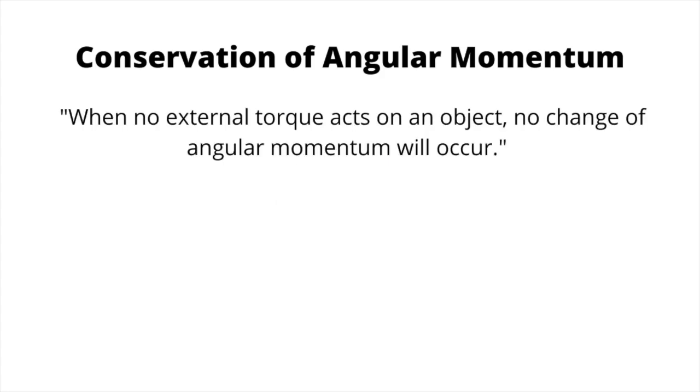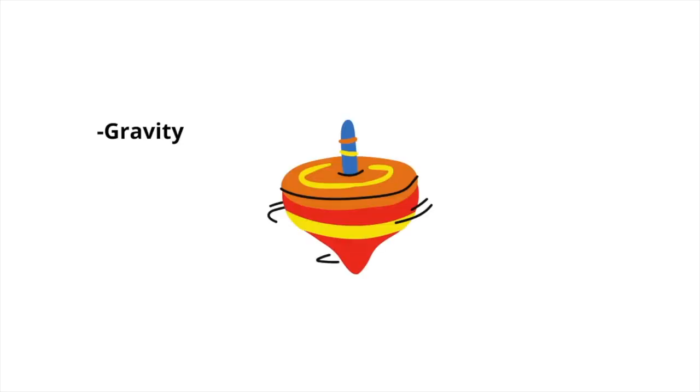In simple words, the top would be spinning indefinitely if no external forces were acting on it. But we do have external forces, which are gravity and friction.